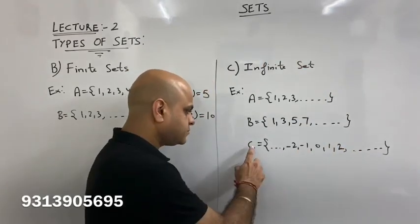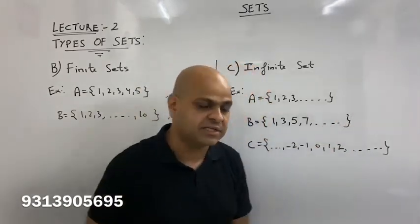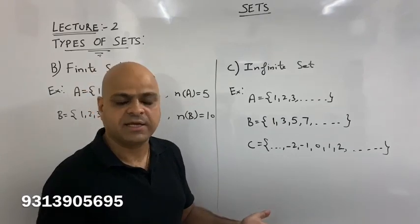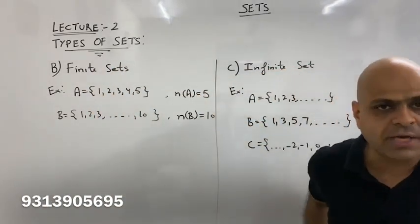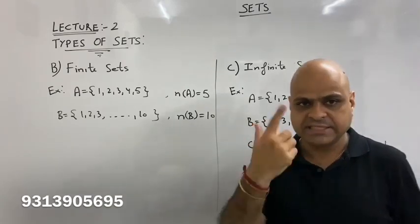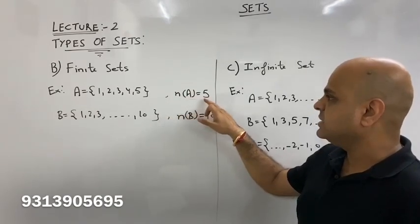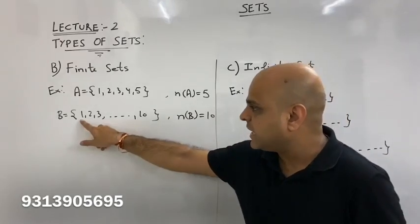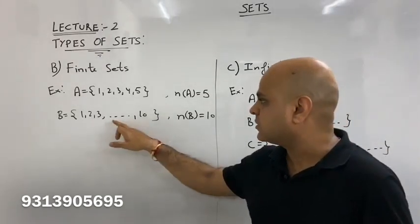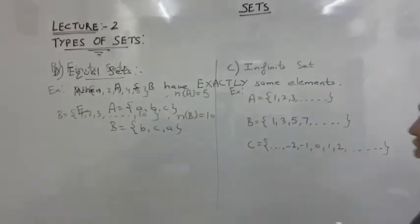An infinite set has an unlimited number of elements — it goes to infinity. For example, the number of elements of set A is equal to 5, and the number of elements of set B is equal to 10.